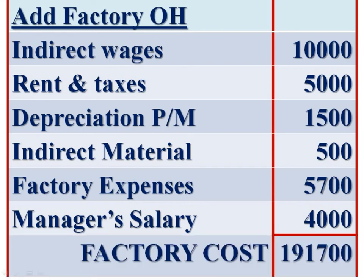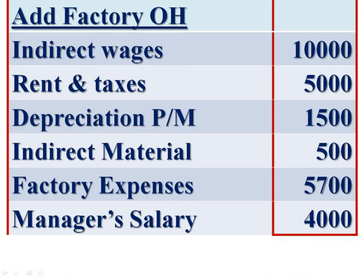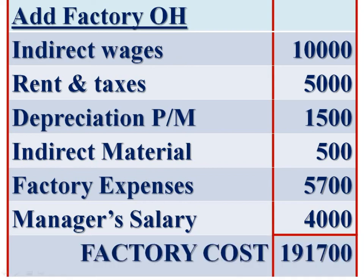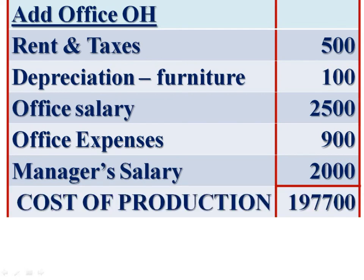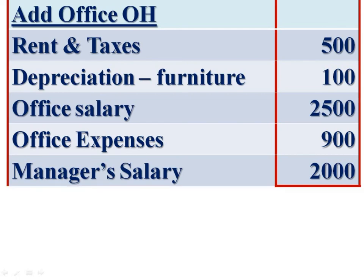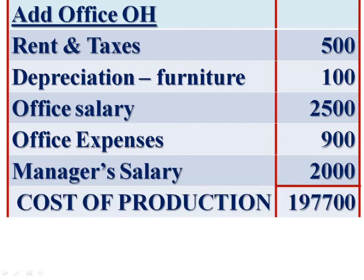Then add office overhead: rent and rates Rs 500, furniture depreciation Rs 100, office salary Rs 2,500, office expenses Rs 2,900, and manager's salary Rs 2,000. We get cost of production: Rs 1,97,700.